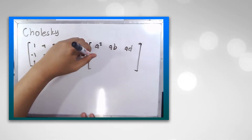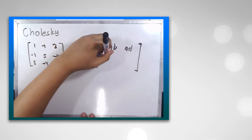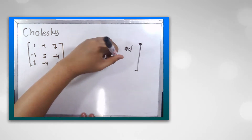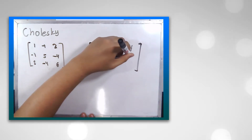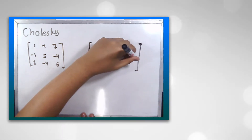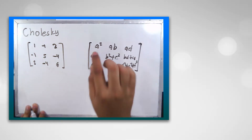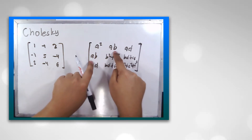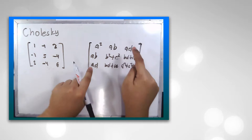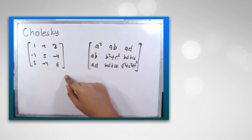This is a simplified method of the Cholesky where we're going to find the values a to f for the three-by-three matrix. What you could notice here is that the top leftmost place is a squared, and then a*b, a*b, a*d — it is symmetrical.